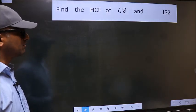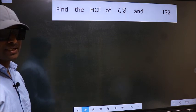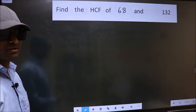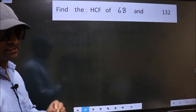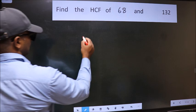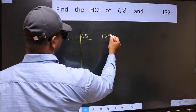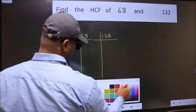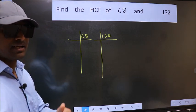Find the HCF of 68 and 132. To find the HCF, we should do the prime factorization of each number separately. What I mean is, 68 and 132. This is your step 1. Next.